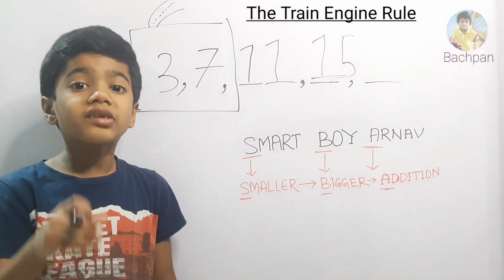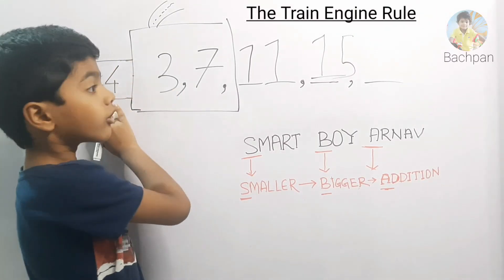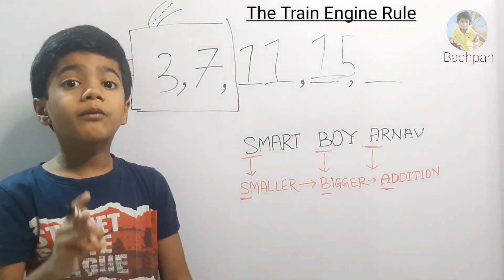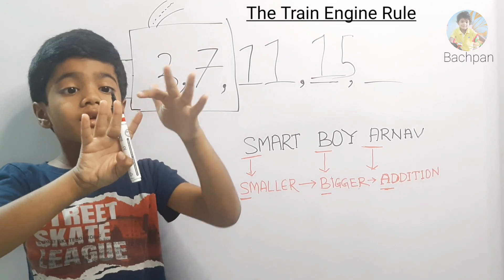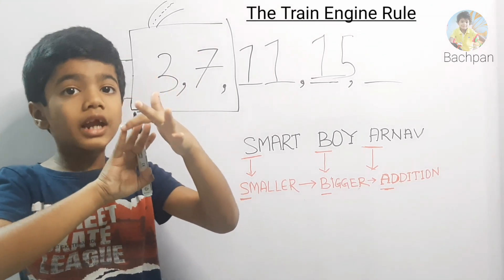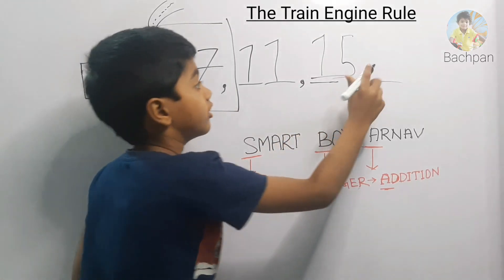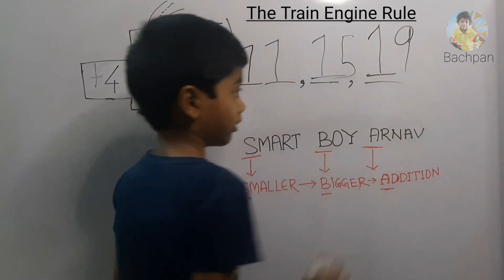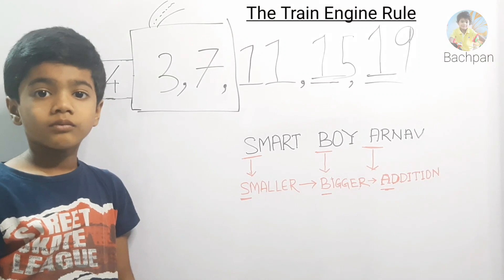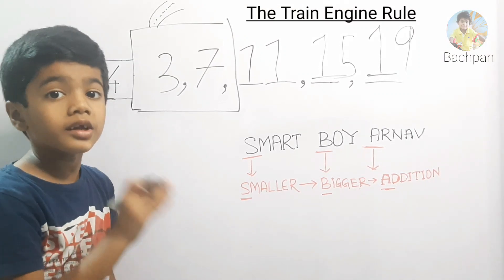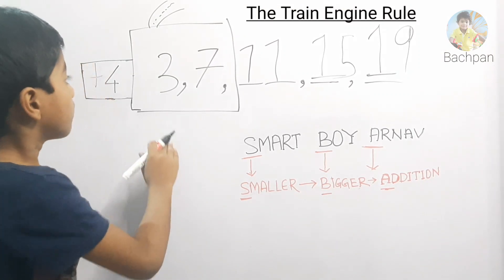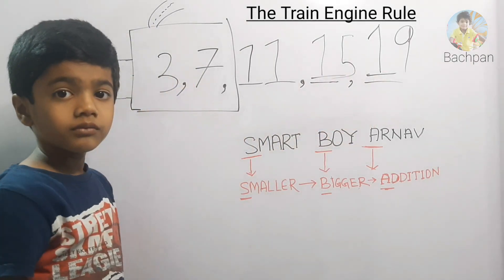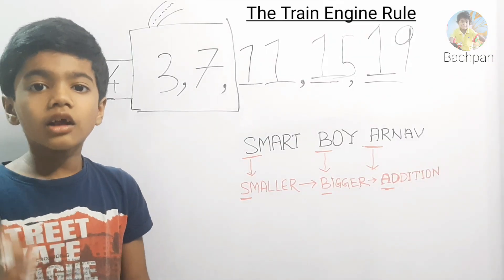Now let's add 4 to 15. What is 15 plus 4? 16, 17, 18, 19. So write here the answer 19. See, the series is completed: 3, 7, 11, 15, 19.